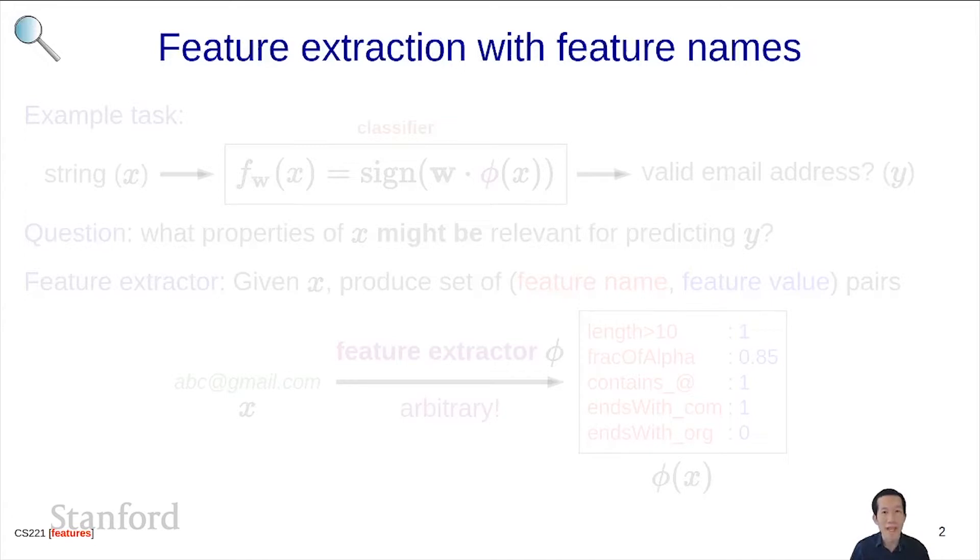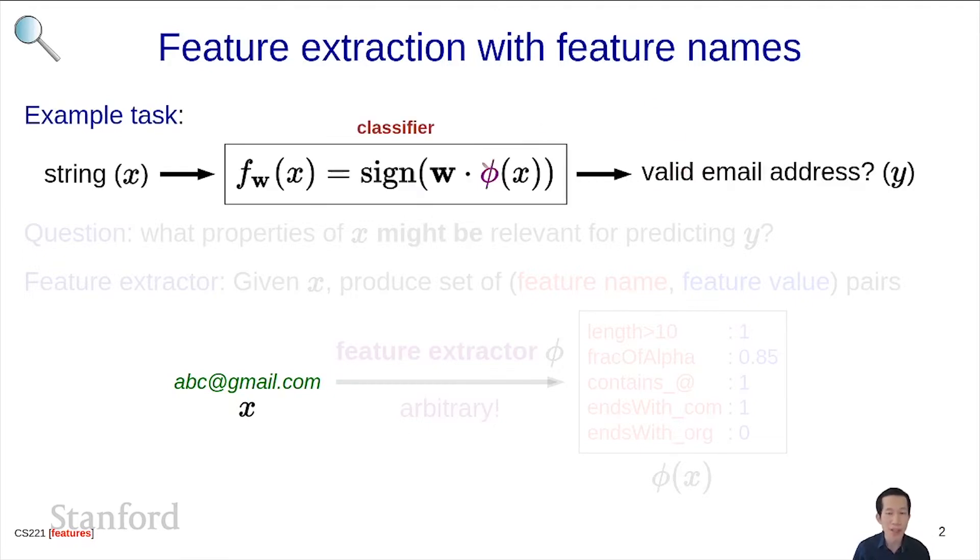Let's look at an example task, and I want to give you an idea of how to choose the feature extractor. Suppose you're given a string, such as abc at gmail dot com, and you're asked to predict whether this is a valid email address or not using a linear classifier. In this case, what we have to do is identify the feature extractor. When you're designing a feature extractor, the main question you ask yourself is what properties of the input x might be relevant for predicting y.